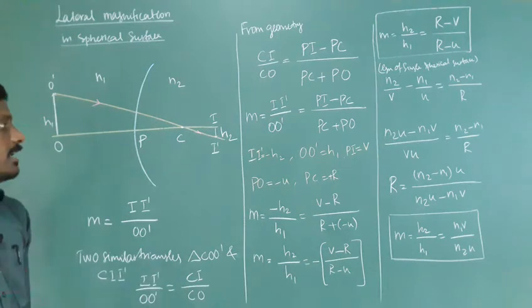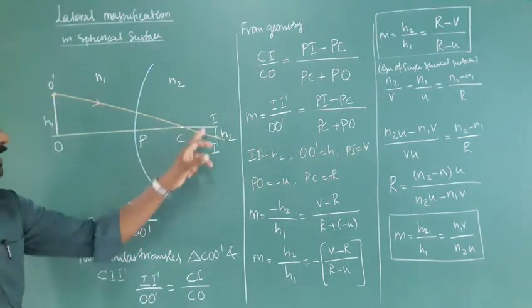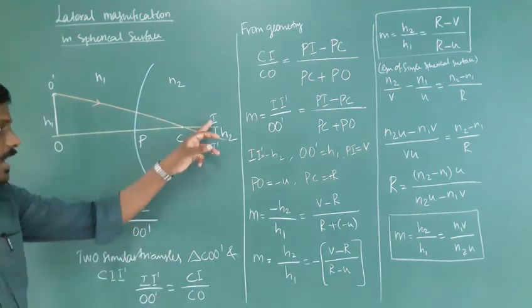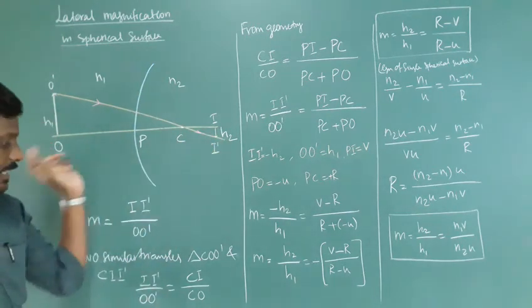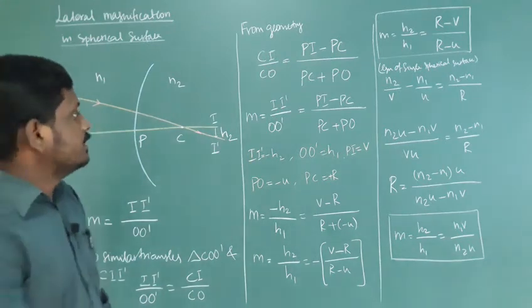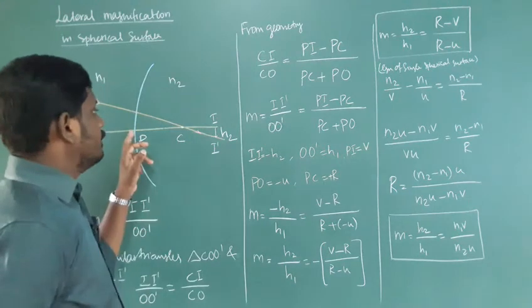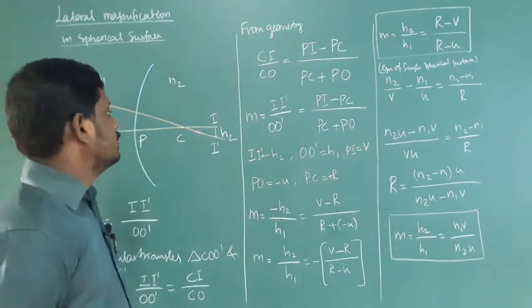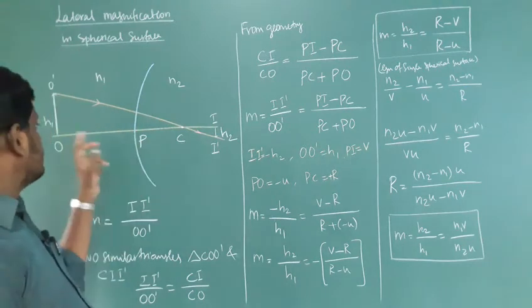These are two similar triangles, COO' and CII'. So II' divided by OO' equals CI by CO. From geometry, CI by CO equals, CI is PI minus PC.